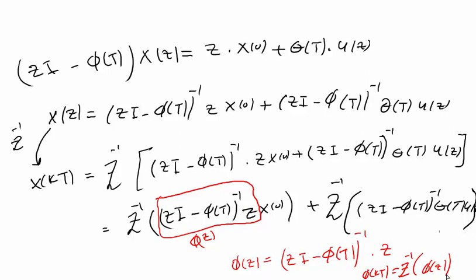This is the Z-transform method for determining the state transition matrix of a discrete state equation, which is Φ(z) or Φ(kT). Thank you for watching — see you in the next video.